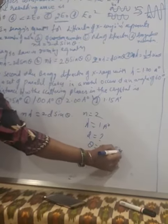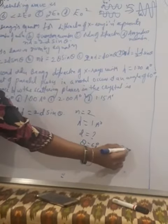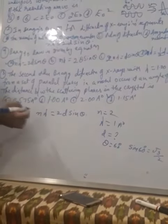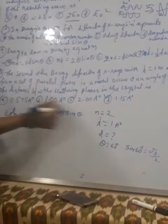And sin 60 degrees, that is equal to root 3 by 2. So substitute all these values here.